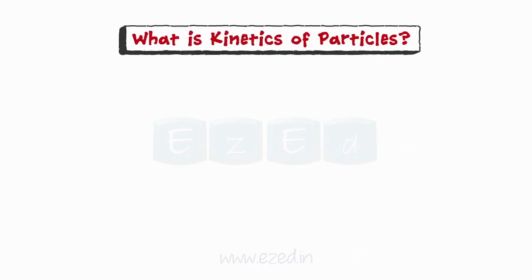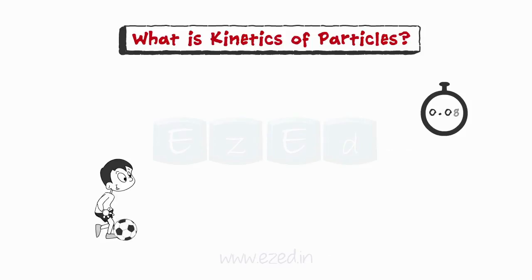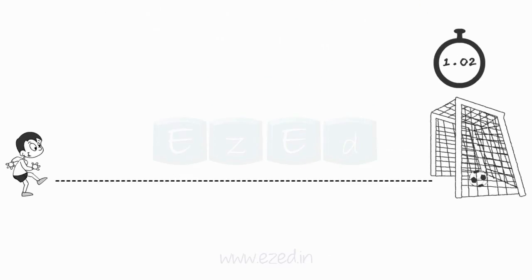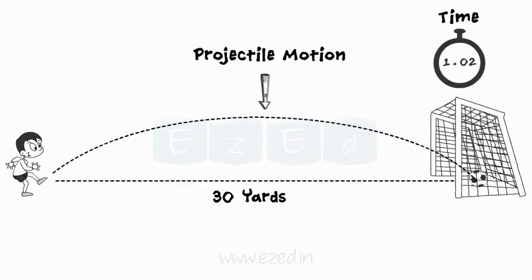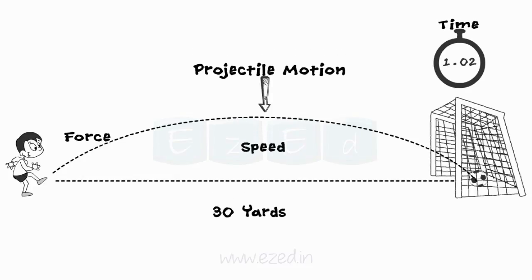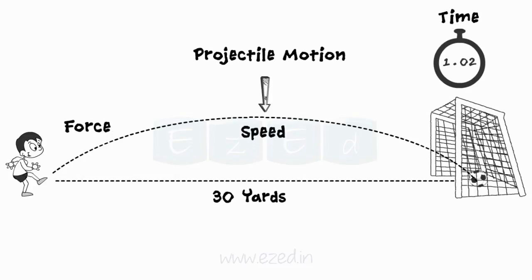Let us understand what is kinetics of particles. Consider a boy playing football who scores a goal from 30 yards. We will analyze the motion of the ball. The factors involved are: force with which the ball was hit, speed of the ball, type of motion, and time taken by the ball to travel 30 yards. So kinetics of particles involves the motion analysis of a moving particle taking into account the forces responsible for the motion.